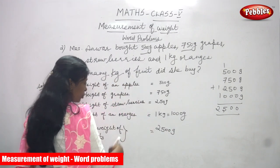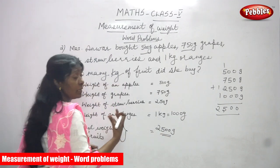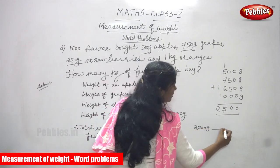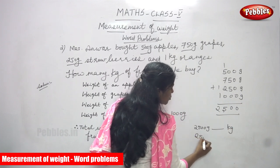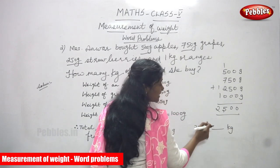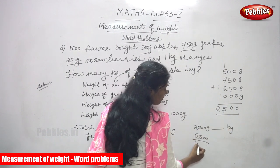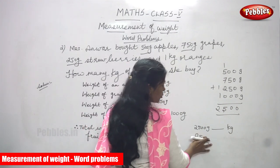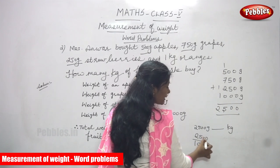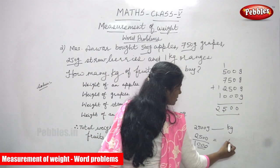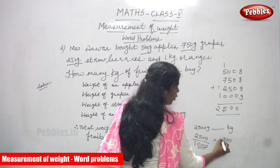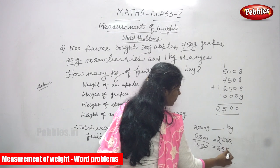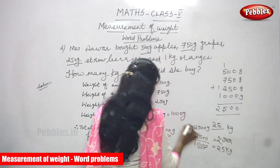Now, 2500 grams needs to be converted into kilograms. To convert grams to kilograms, you divide by 1000. Since 1000 has three zeros, you move the decimal point three places to the left: 2500 becomes 2.5. So the answer is 2.5 kilograms.